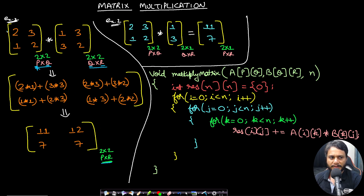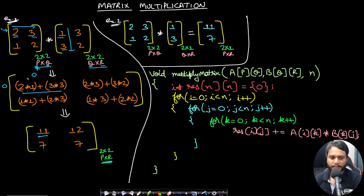To calculate the top-left corner element at position (0,0), you move left to right along the 0th row of the first matrix while moving top to bottom along the first column of the second matrix. So you multiply 2 with 1 and add it to 3 times 3, giving you 2 plus 9 which equals 11. Similarly, for the next column in the same row: 2 into 3 is 6 and 3 into 2 is 6, so it will be 12. When you are done with the entire row, you go to the next row and repeat it for the same columns.